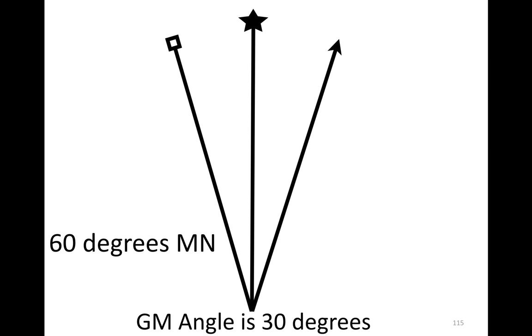Now you convert this. You want to convert it to grid azimuth because we're going to plot this on a little map. So what do we do? Move your finger in the direction that you want to convert to. What is that? You go left. So Lars Ulrich. L-A-R-S. Left. Add. So 60 plus 30 is 90 degrees.